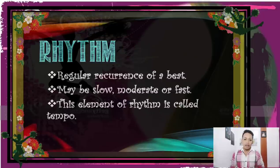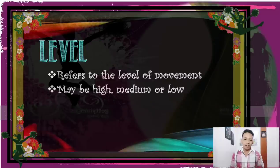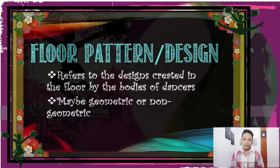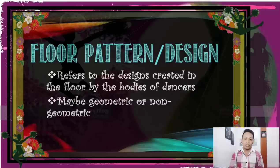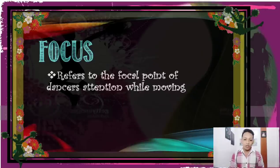The elements of movement in space — reviewed from grade 9 — include: rhythm (the regular recurrence of a beat, which may be slow, moderate, or fast; this element is called tempo); level (the level of movement, which may be high, medium, or low); floor pattern or design (designs created on the floor by dancers' bodies, which may be geometric or non-geometric); and focus (the focal point of the dancer's attention while moving).